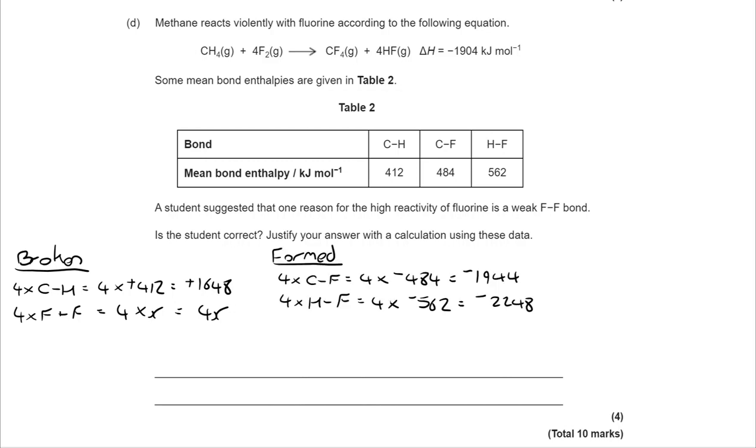From there, I can then look at the bonds that are formed and I'm making four C-F bonds. That's four times negative 484. They're negative because it's exothermic and bonds forming are always exothermic. Exothermic is negative. And similarly for the four H-F bonds that we've made.